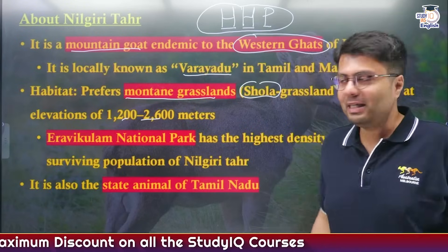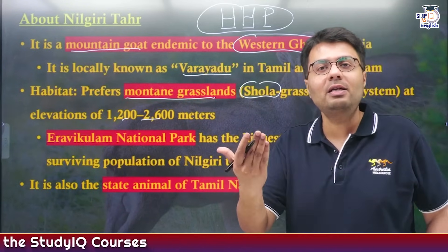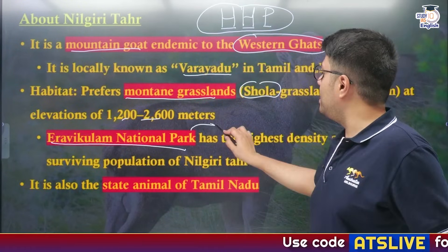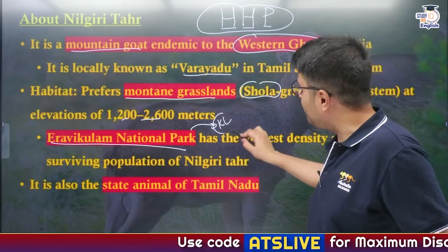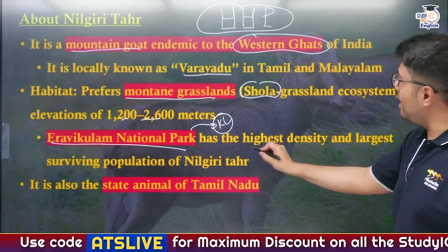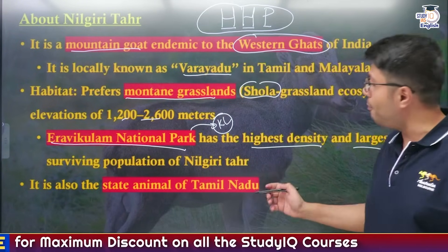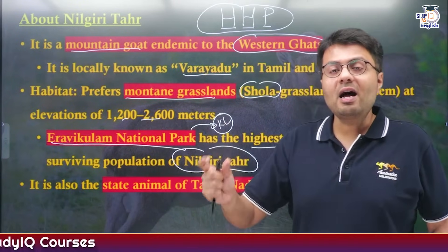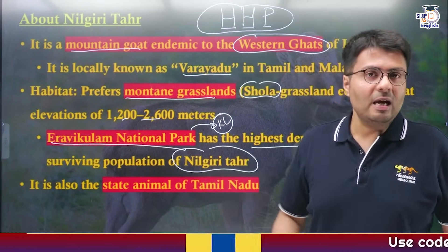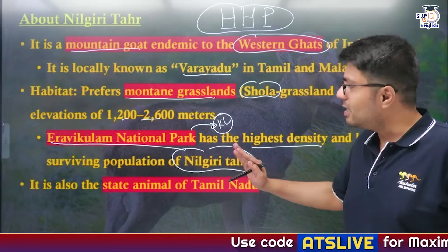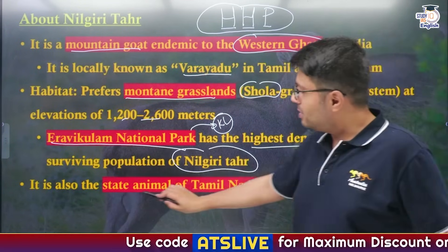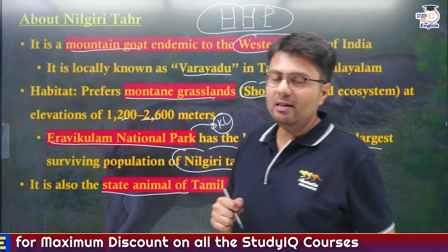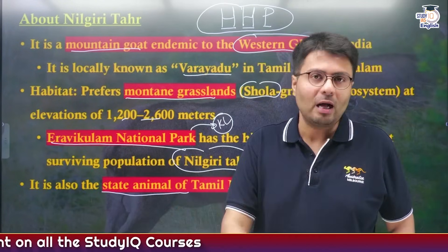Surprisingly, the population of Nilgiri Tahr is not highest in Mukurti National Park — it is highest in Eravikulam National Park, a protected area in the neighboring state of Kerala, which has the highest density and the largest surviving population of Nilgiri Tahr. Additionally, Nilgiri Tahr has the distinction of being the state animal of Tamil Nadu.